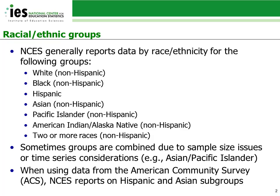Sometimes, groups are combined due to small sample sizes or to present time series data. For example, separate data on Pacific Islanders were not often collected prior to the early 2000s. Therefore, when we present long-term trends on certain educational outcomes, Asians and Pacific Islanders are combined into one group to reflect the fact that these groups were collected together in the older data. Sample size issues or other limitations may require that different categories be presented as a combined group. Recently, we have begun reporting some data on Asian and Hispanic subgroups from the American Community Survey due to interest in examining variability within these groups. NCES will continue to explore options for presenting better data by race and ethnicity to meet the needs of the public while maintaining high statistical standards.